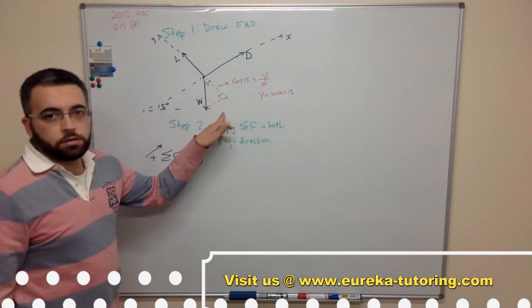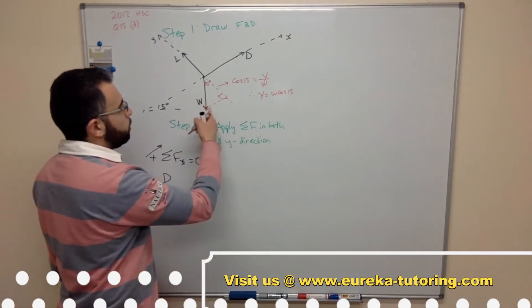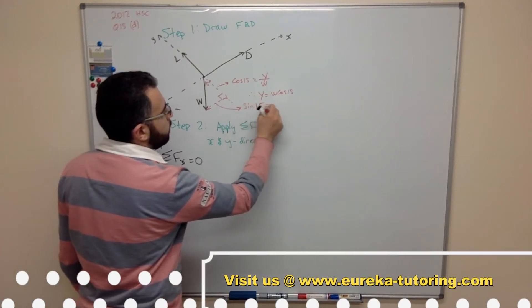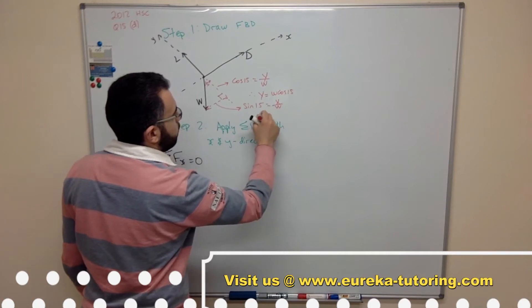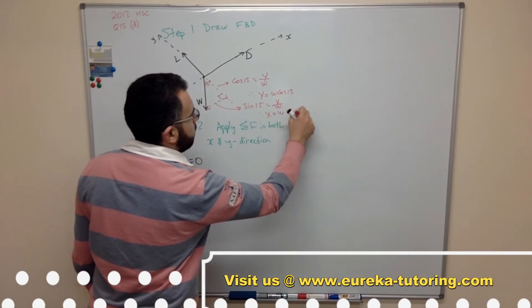Now we also need the x component of the weight force. So this is opposite on hypotenuse which is sine. So this will be sine 15 equals we'll call that x on w. Therefore x equals w sine 15.